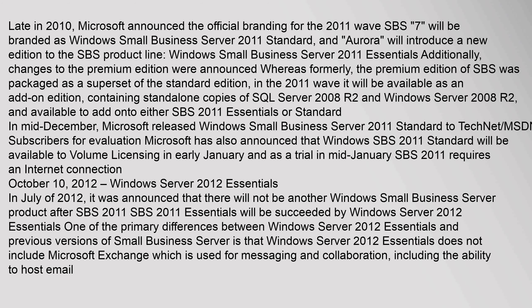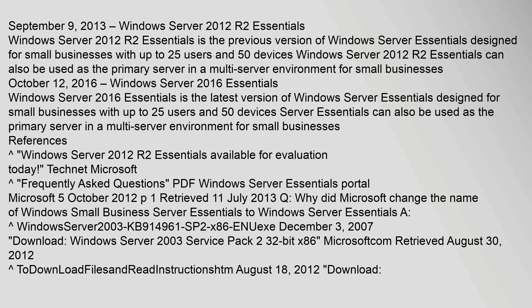October 10, 2012: Windows Server 2012 Essentials. In July 2012, it was announced that there will not be another Windows Small Business Server product after SBS 2011 — SBS 2011 Essentials will be succeeded by Windows Server 2012 Essentials. One of the primary differences between Windows Server 2012 Essentials and previous versions of Small Business Server is that Windows Server 2012 Essentials does not include Microsoft Exchange, which is used for messaging and collaboration including the ability to host email. September 9, 2013: Windows Server 2012 R2 Essentials is the previous version of Windows Server Essentials, designed for small businesses with up to 25 users and 50 devices.